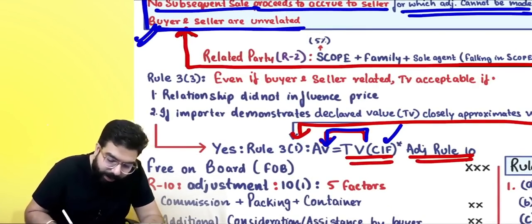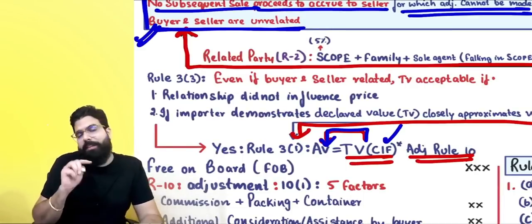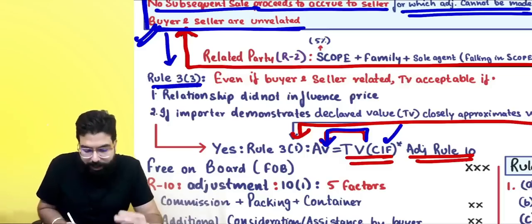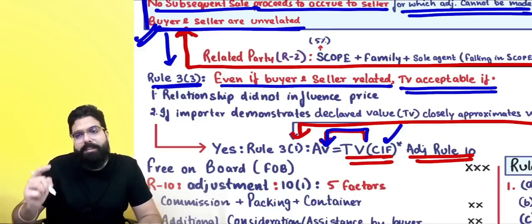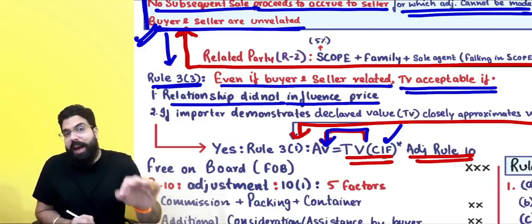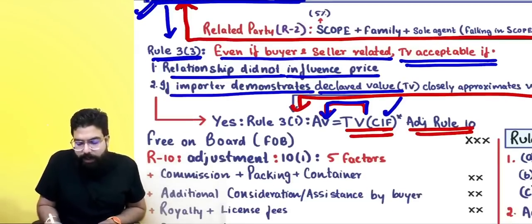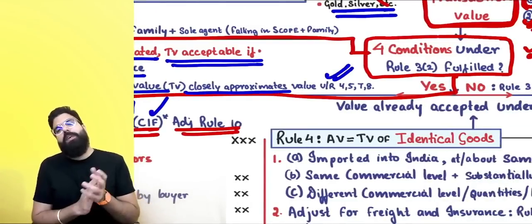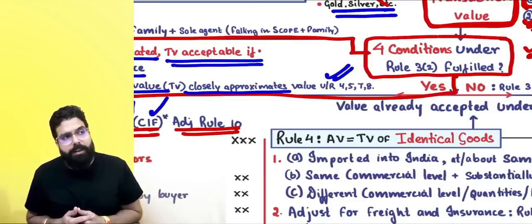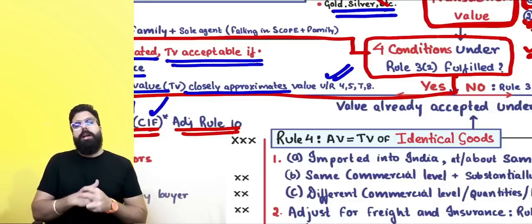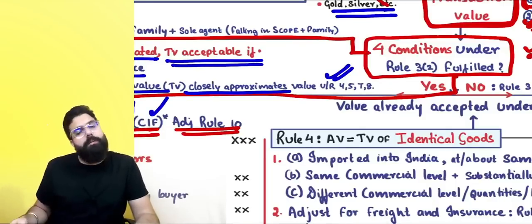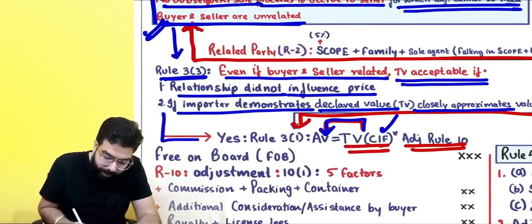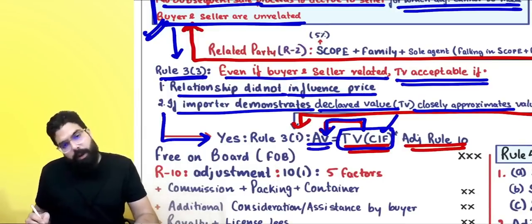Even if buyer and seller are related, the transaction value will still be accepted as the acceptable value if Rule 3(3) condition is satisfied. Rule 3(3) says: even if buyer and seller are related, transaction value is acceptable if the relationship did not influence the price, or you demonstrate that the declared value closely approximates the value that would be determined under Rules 4, 5, 7, or 8. If you prove this, the transaction value will still be accepted.